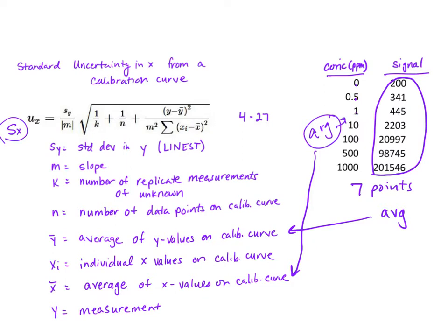You take the average of the concentration, that's your x bar. And then each individual value of the concentration, you subtract the average from for this piece of the equation.